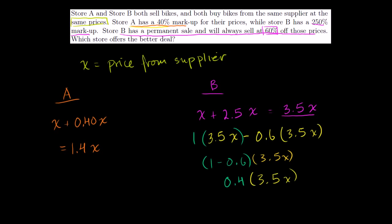And let's multiply that out. So if we take 3.5 times 0.4. 4 times 5 is 20. 4 times 3 is 12. Plus 2 is 14. And we have one, two numbers behind the decimal spot. Two numbers. One, two. 1.4. So they're going to sell it at 1.4x.